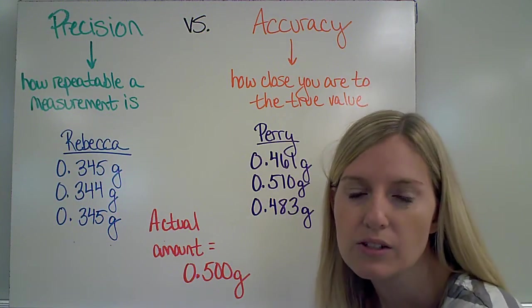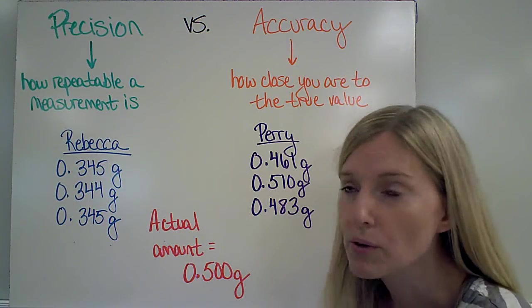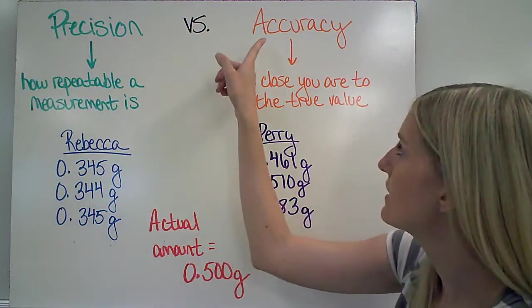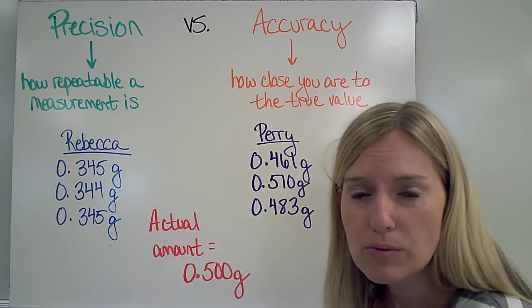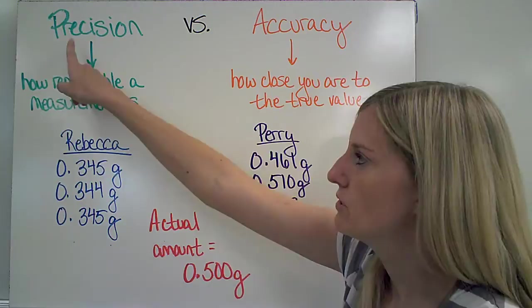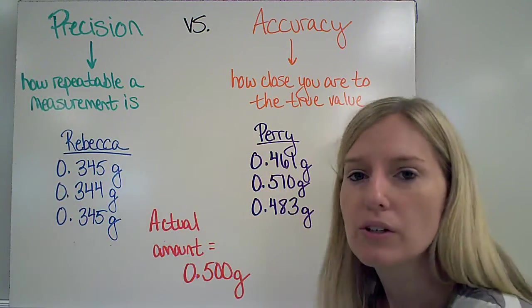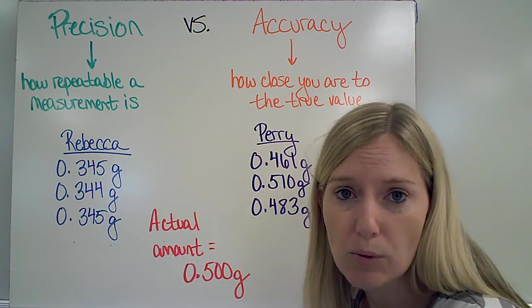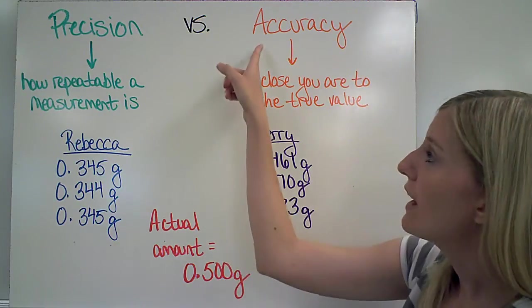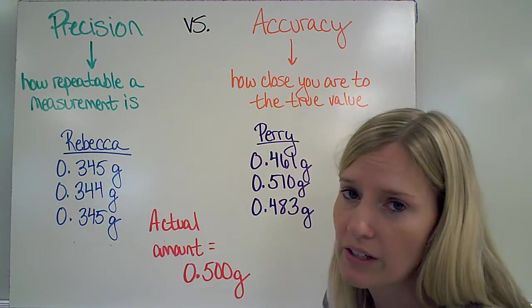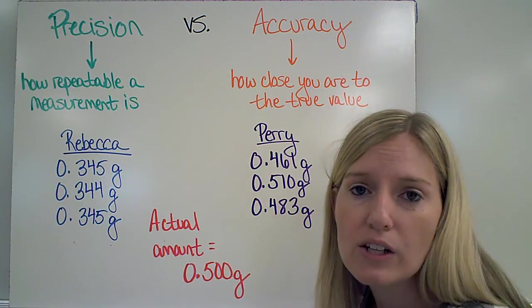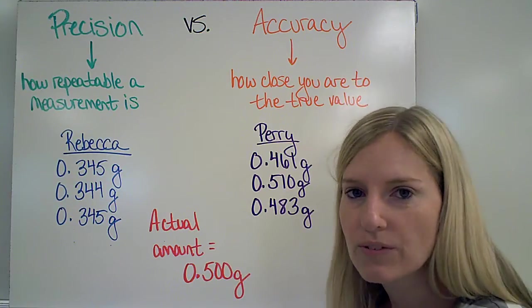When we make measurements in science, we want to make sure that they are both precise and accurate. The difference between the two is that with precision, you want to make sure that your measurement is repeatable. With accuracy, you want to make sure that your measurement is very close to the true value or the correct value.